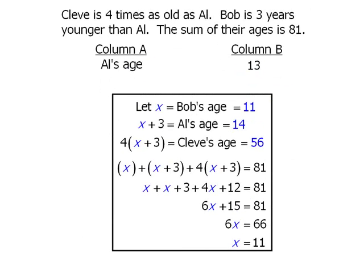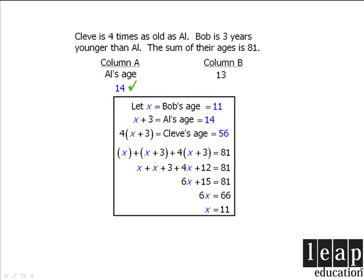So column A, Al's age, is equal to 14, in which case 14 is greater than 13, which means our answer is A.